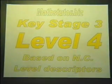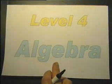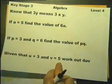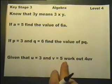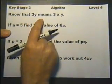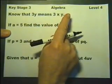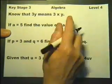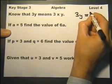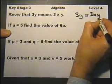Work based on the National Curriculum level descriptors for Algebra. Quite a simple one here to start with: know that 3y means 3 times y. That sort of says it all — to actually know that 3y means 3 multiplied by y.